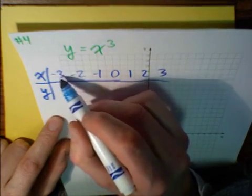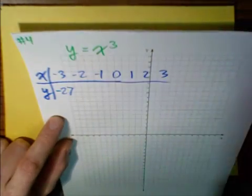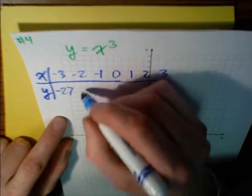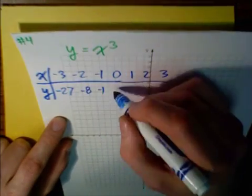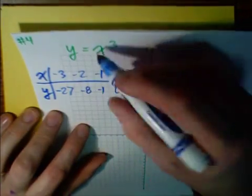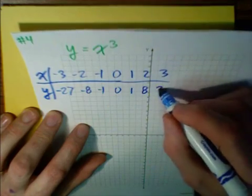So negative 3 times negative 3 times negative 3 is still negative. It's going to be negative 27. Negative 2 cubed is going to be negative 8. Negative 1 cubed is negative 1. 0 cubed is 0, 1 cubed is 1, 2 cubed is 8, and 3 cubed is 27.